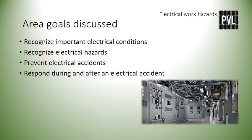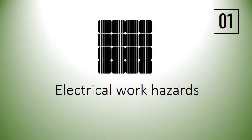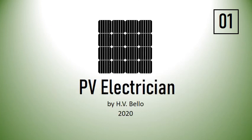Here are the area goals just discussed: recognize important electrical conditions, recognize electrical hazards, prevent electrical accidents, and respond during and after an electrical accident. This has been Area 1, Electrical Work Hazards. PV Electrician by Hector Vivello, April 2020.